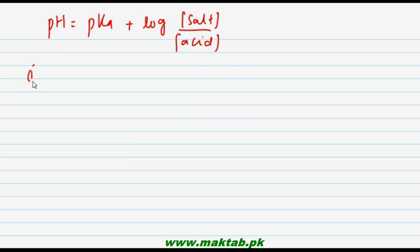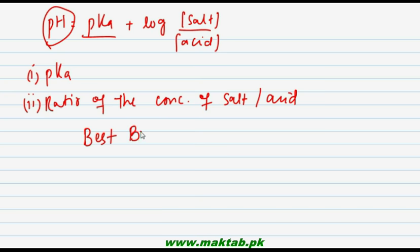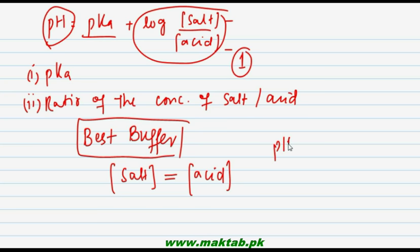Two things the pH of any buffer depends on: first is pKa, and second is the ratio of concentration of salt to acid. The best buffer is one in which concentration of salt equals concentration of acid. When both values are equal, their ratio is 1, and pH equals pKa, since log(1) = 0.